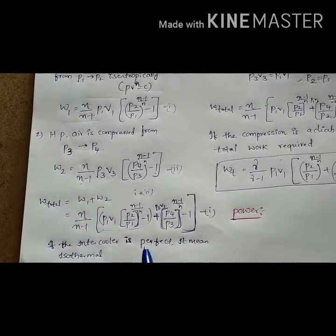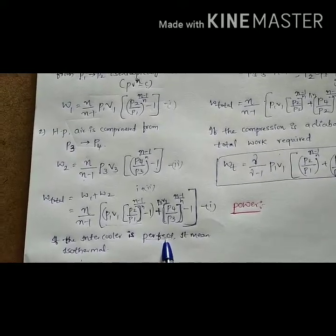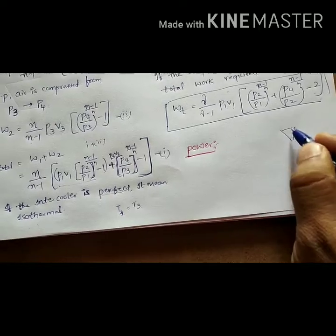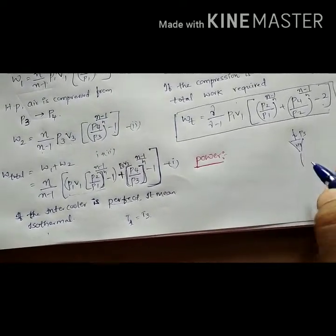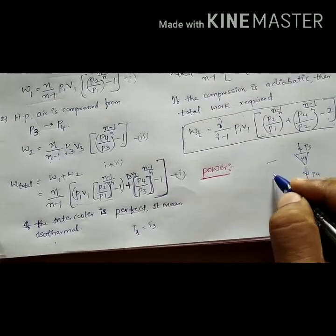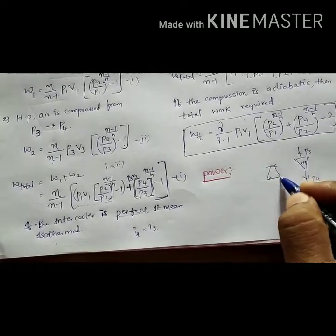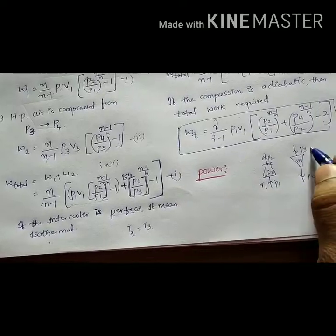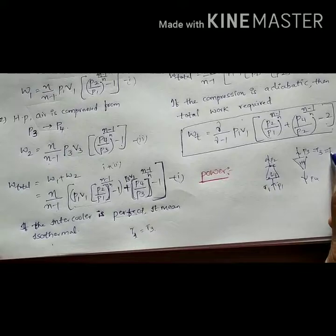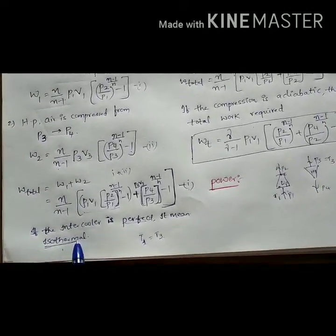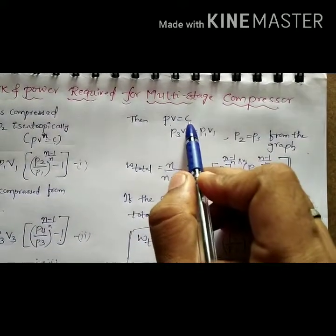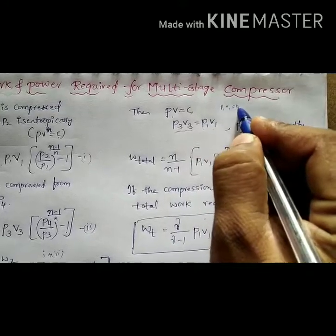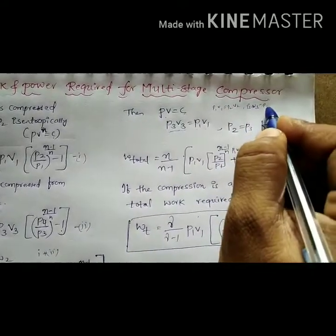We are using an intercooler. If the intercooler is perfect, as I said in the previous lecture, the temperature at the starting point of the high pressure compressor T3 equals the temperature at the inlet T1. When T3 = T1, the intercooler is perfect and that process is isothermal — temperature is constant. For an isothermal process PV = constant, so P3V3 = P1V1. We can write P1V1 = P2V2 or P3V3 = P1V1.